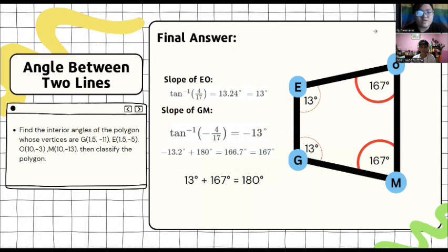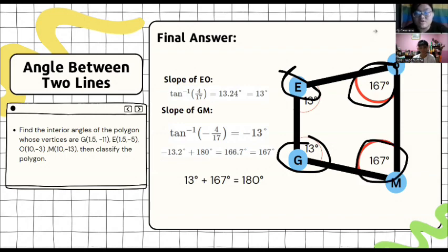Now, the reason why 13 degrees is on point G and point E is because we use the slope 4 over 17, and because they are congruent. And then for the angle 167, we put it on O and M because they are also congruent.